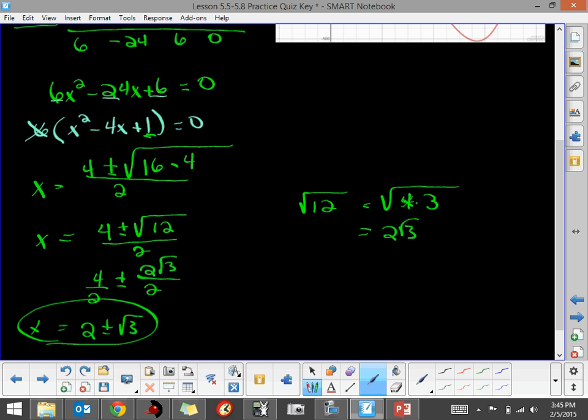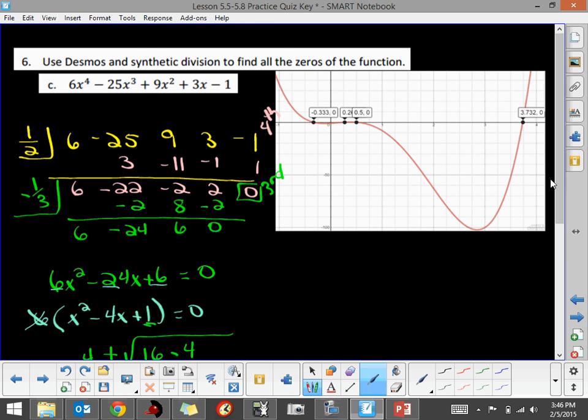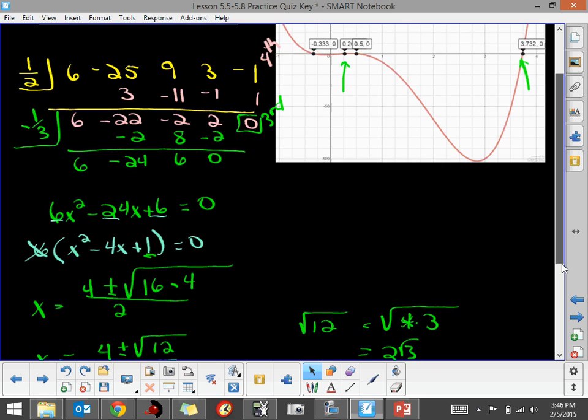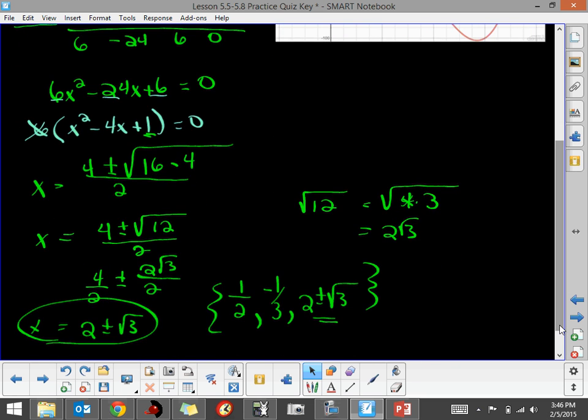So I have these zeros. We have 1 half. We had a negative 1 third. And then we had 2 plus or minus the square root of 3. This 2 plus and minus the square root of 3, those should be those values for those decimal numbers that you see here. If you want to test them on decimals or any correct under calculator, you can. But that should satisfy that equation.